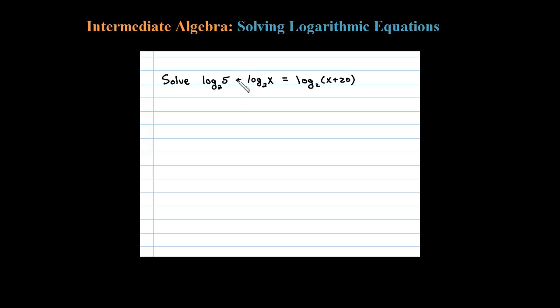We know a property says that if you have two logs where you're adding, you're allowed to multiply those two arguments and get an equivalent expression. That's what I did here, condensing that down to one logarithm.